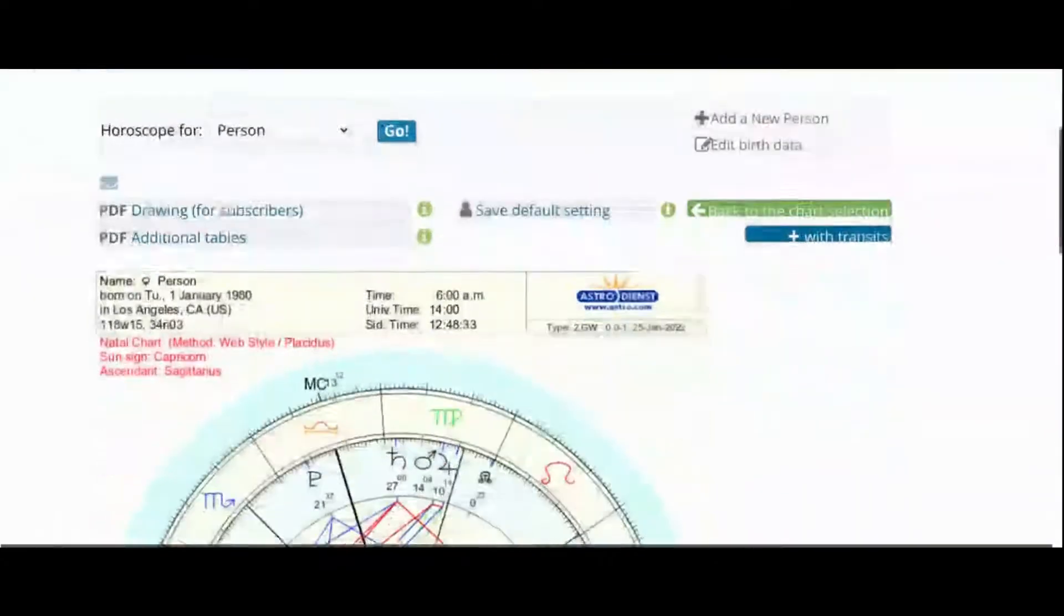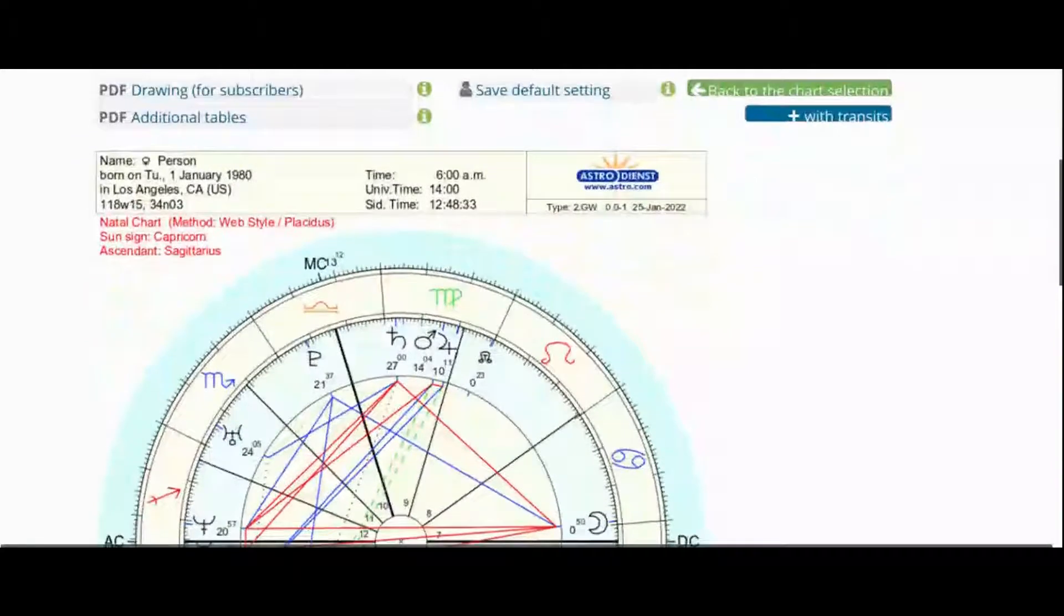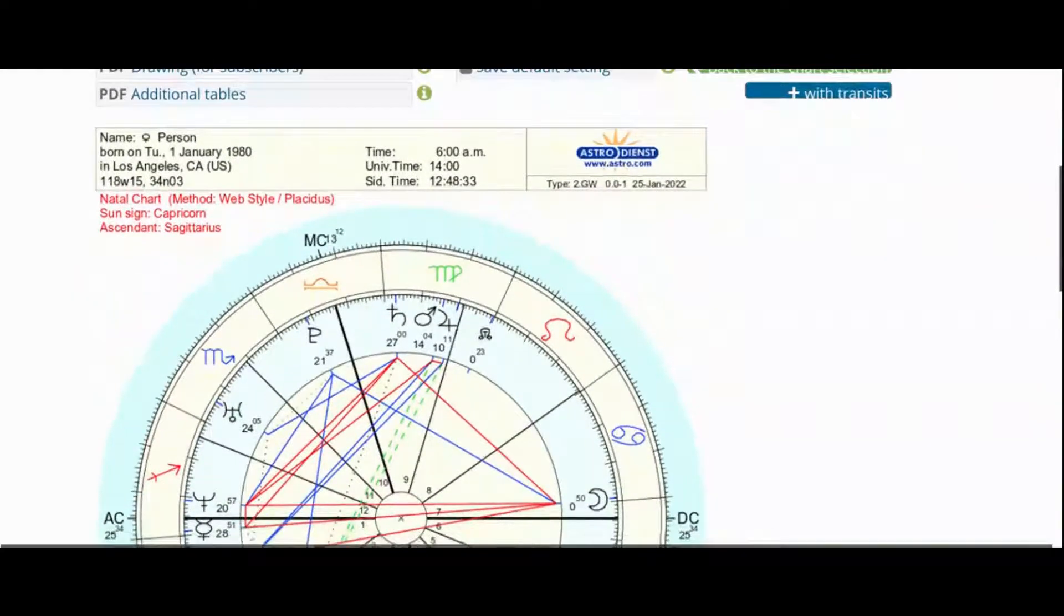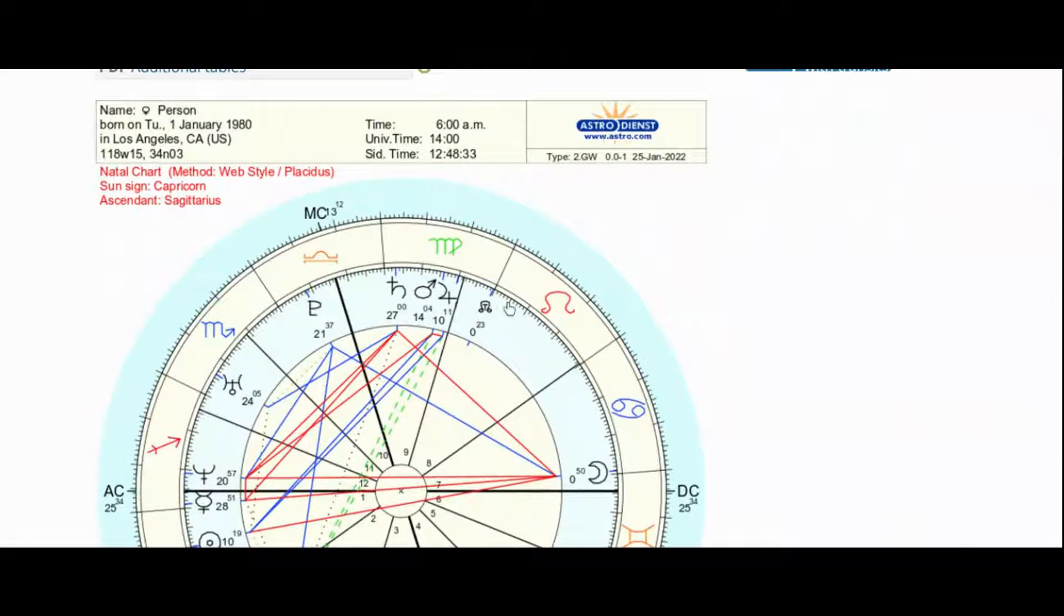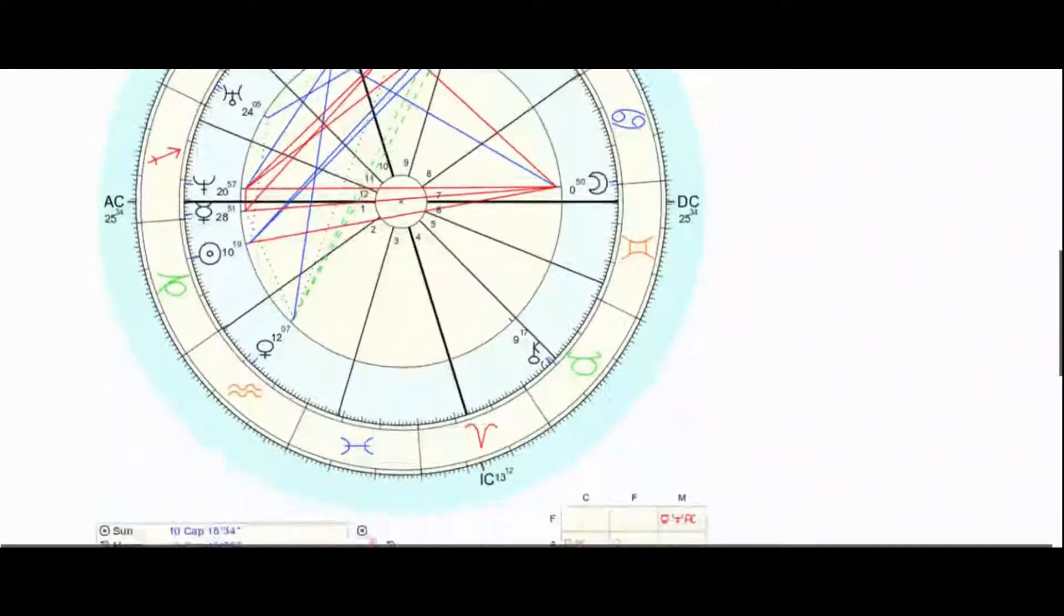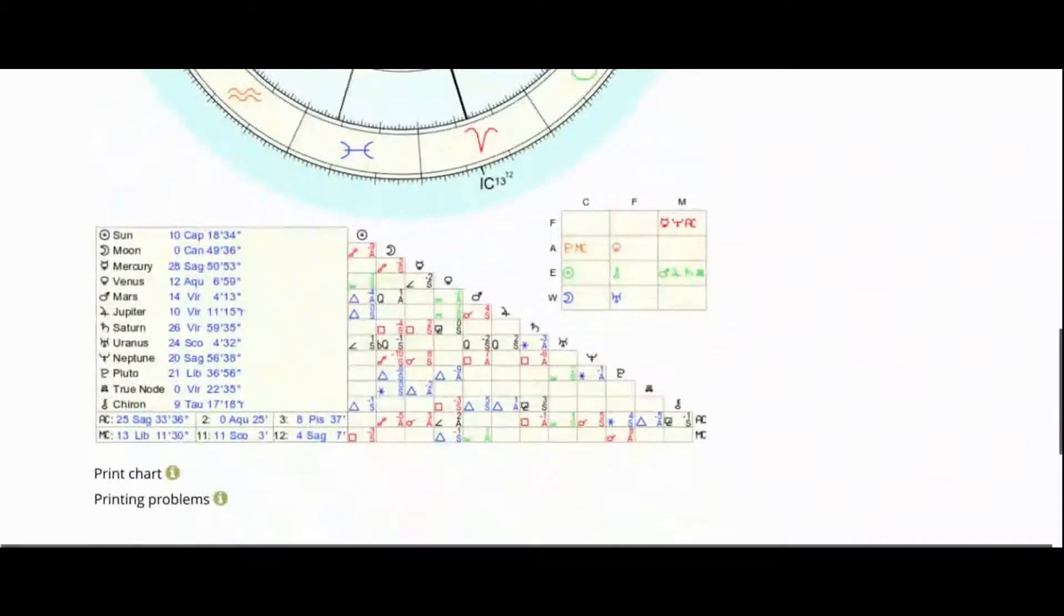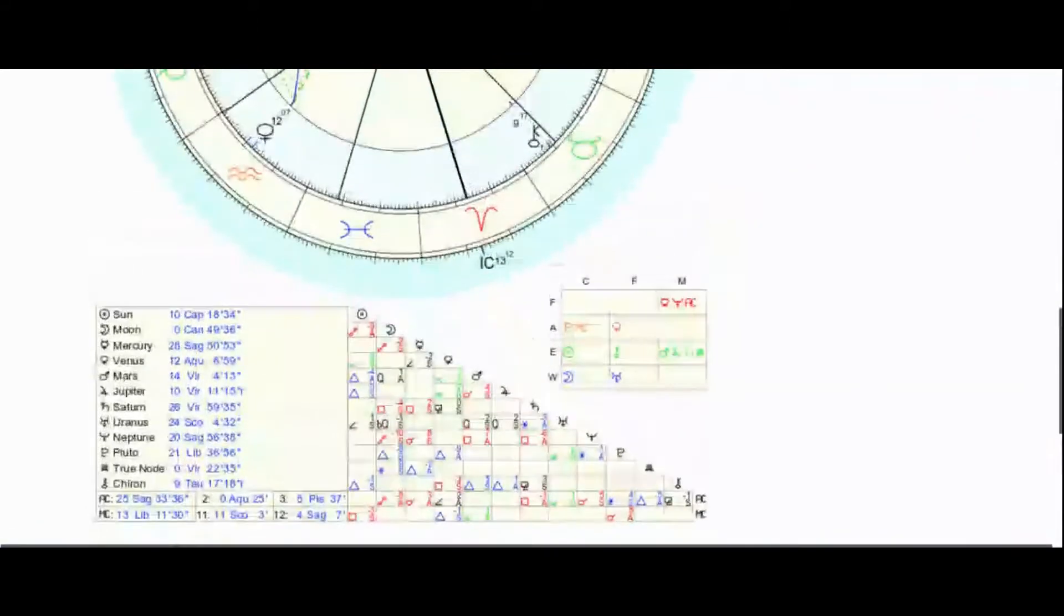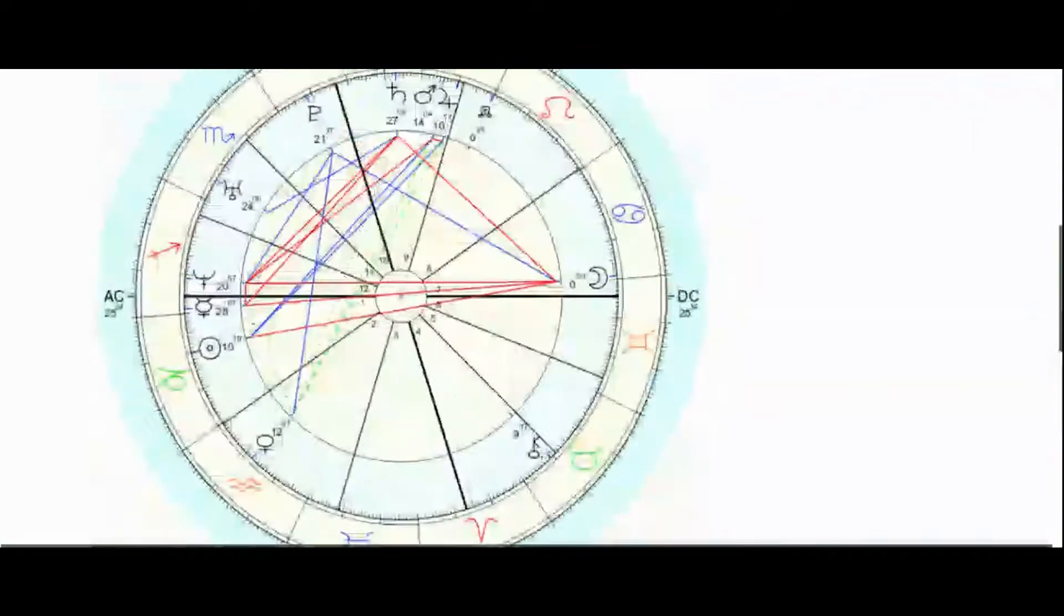And this is what a chart looks like on astro.com. It's a vertical chart with the wheel at the top, a table of the location of the planets and houses on the bottom left, a grid of aspects between the planets on the bottom right, and a table just above that of the planets sorted by element and quality.